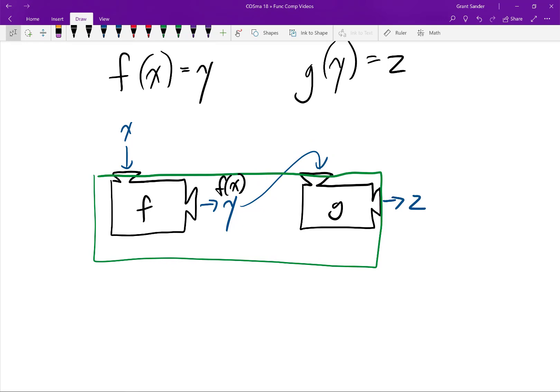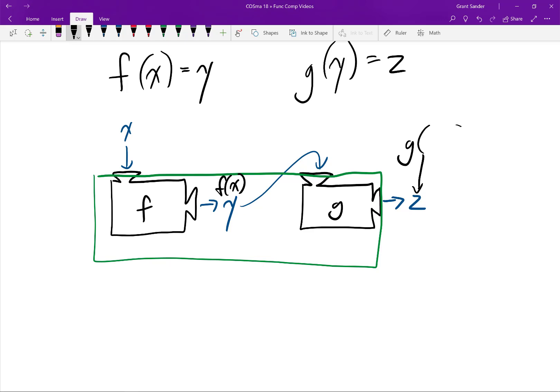So then what we're doing is inputting f of x into this function g. And then g gives us a value of z as its output. We can think of z as the output of g at a given input value. And what we're inputting into g is actually a value of f of x.